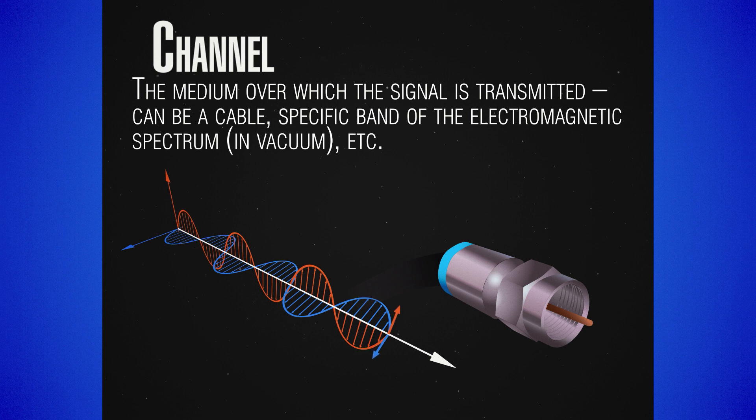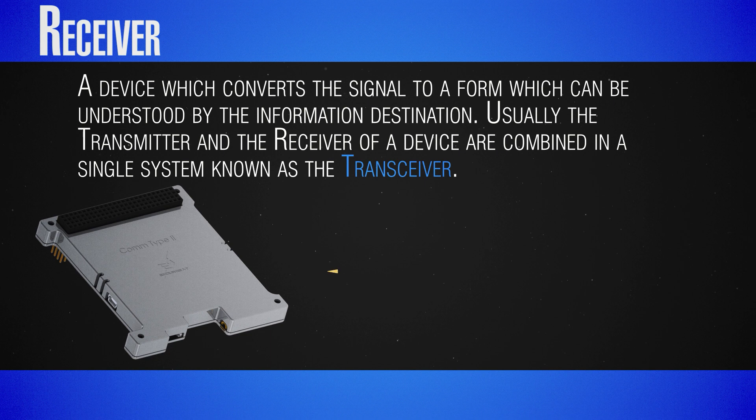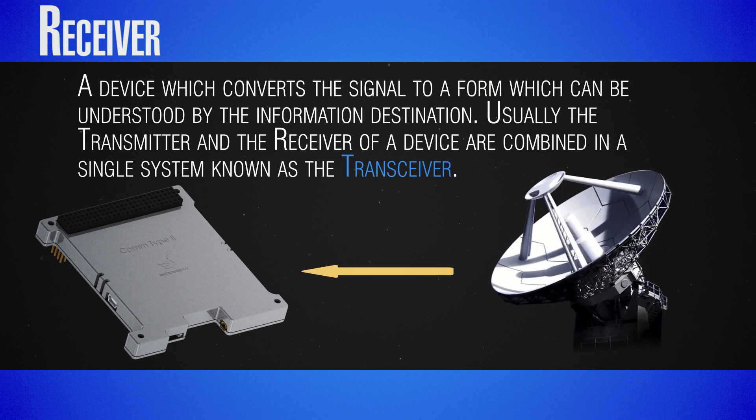The channel is the physical medium over which the signal is transmitted. This can be a coaxial cable, a specific band of radio frequencies, or even a beam of light.